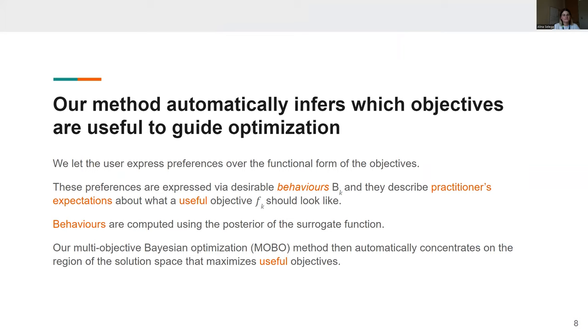We introduce a concept of desirable behaviors, which describe practitioners' expectations about what a useful objective should look like. And these behaviors are computed using the posterior of the surrogate function. And then our multi-objective Bayesian optimization method automatically concentrates on the region of the solution space that maximizes useful objectives.